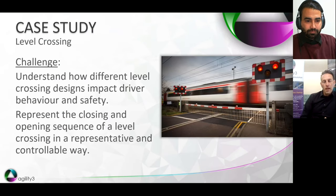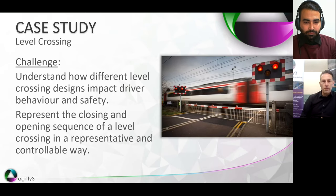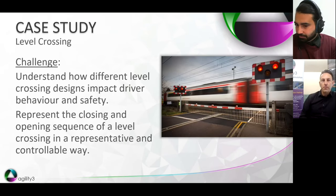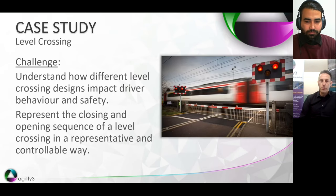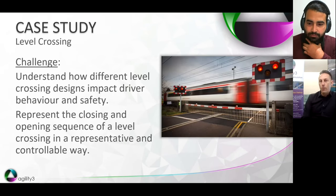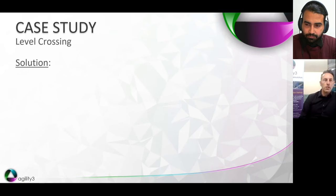Another case study involves level crossing safety, again using the OpenSceneGraph visual system. The challenge was to understand how different designs of level crossing impact driver safety and behaviour. The important thing was to represent the level crossing, the different types of barriers, and in particular the animated closing and opening sequences in a representative and controllable way, so that the level crossing sequence could start just as the driver approaches. Again, we had to think about how to do this within OpenSceneGraph.